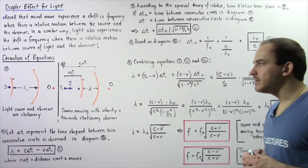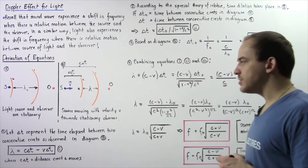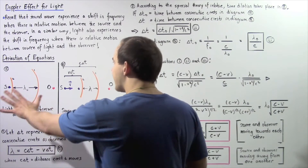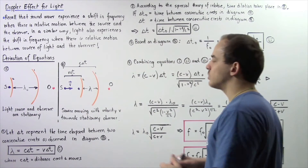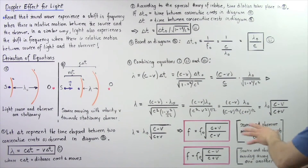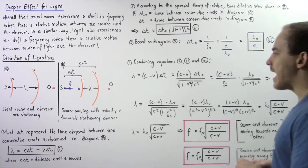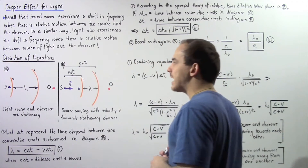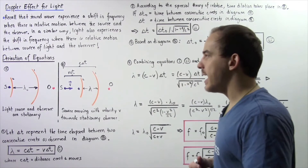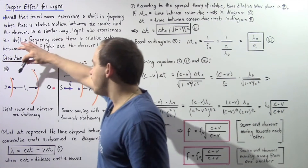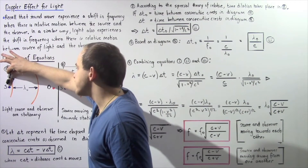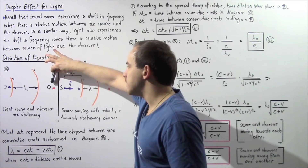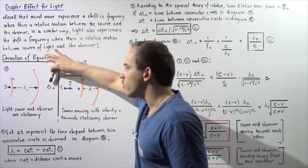Let's begin by deriving these equations. We're going to set up Diagram A and Diagram B and use these diagrams to derive our equations. In Diagram A, we have a stationary light source given by point S, and a stationary observer given by point O.